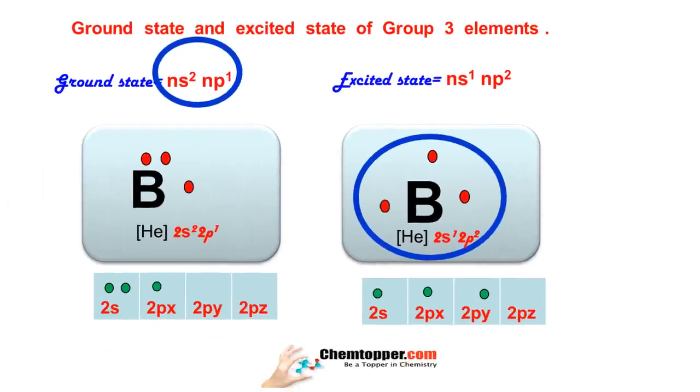Now it is ns1 np2. These 2 electrons of the p orbital are present in 2 different p sub-orbitals. So you can see the difference in the ground state and excited state electronic configurations as well as in their Lewis dot representation.